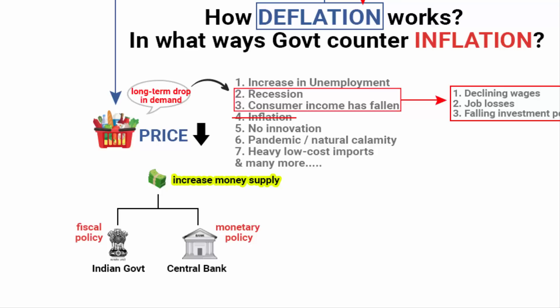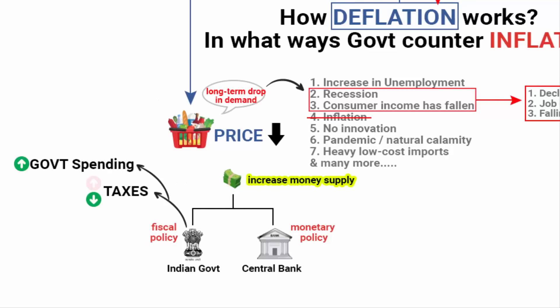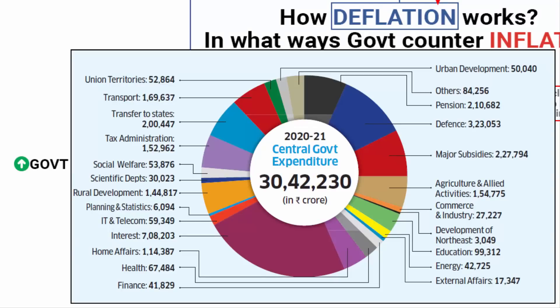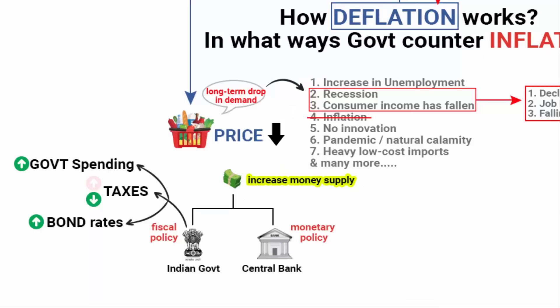That is not true, at least not in the case of the Indian economy. The United States Federal Reserve does print money. So what the Indian government does is, with the help of fiscal policy, they can lower or increase taxes. In the case of deflation, the government lowers the taxes. They also increase government spending — it could be on infrastructure, welfare schemes, etc. The government also increases the bond rates.